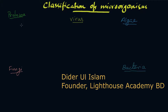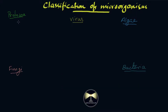Welcome back to this video on O-level biology. Today we'll be discussing the various classifications of microorganisms. Microorganisms are living organisms that cannot be seen with the naked eye — you need a microscope, either a normal microscope or an electron microscope. There are five groups of microorganisms: protozoa, virus, algae, fungi, and bacteria. Today we will look at how they differ structurally, and as a result why they are classified differently.